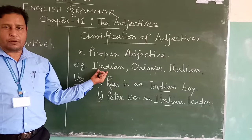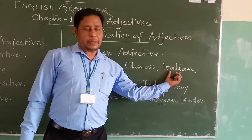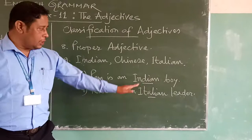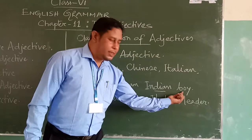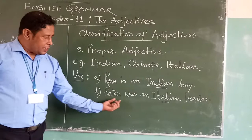India is a proper noun, so from India we get Indian — so that is a proper adjective. Again, from China we get Chinese, and from Italy we get Italian. So these are the proper adjectives we get from proper nouns. For example: Ram is an Indian boy — so this word 'Indian' is an adjective, it modifies or qualifies the noun 'boy' in the sentence.